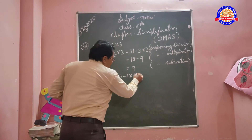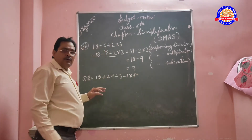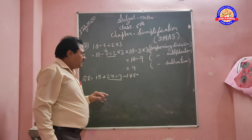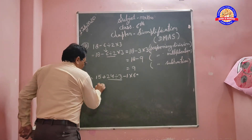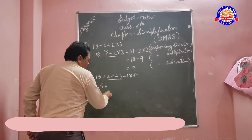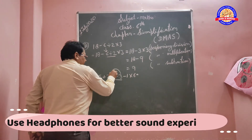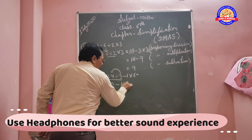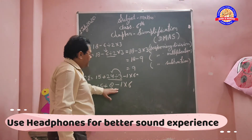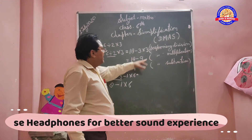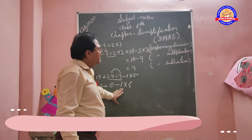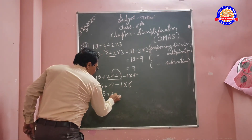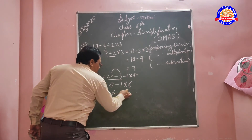I will solve this question. First, divide: 15 plus 10 divided by 3 into 24 minus 1 into 6. Performing division, then multiply. Result: 15 plus 8 minus 6.